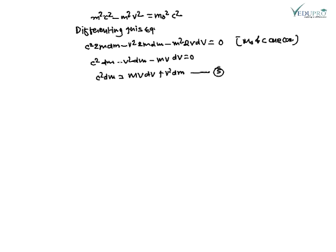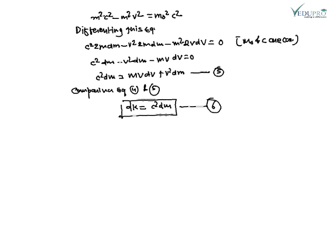Comparing equation four and equation five, we find that dk equals c²·dm. This is equation number six.